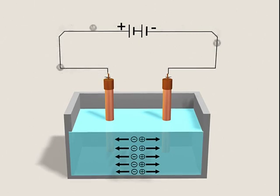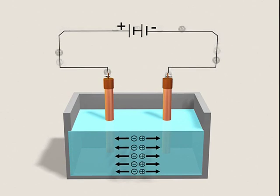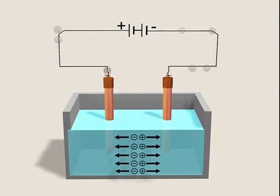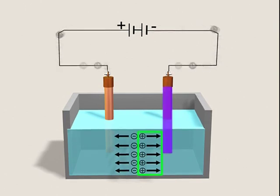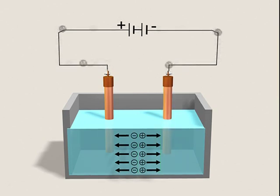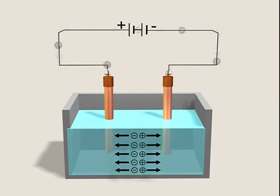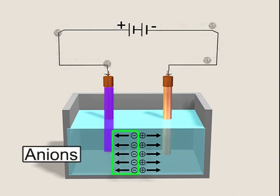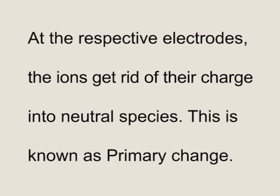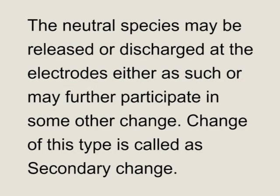When electric current is passed, the ions present in the electrolyte are attracted towards the oppositely charged electrodes. The positive ions move towards the cathode, the negative electrode, and are therefore called cations. The negative ions move towards the anode, the positive electrode, and are therefore called anions. At the respective electrodes, the ions get rid of their charge to form neutral species — this is known as primary change. The neutral species may then participate in further secondary changes.